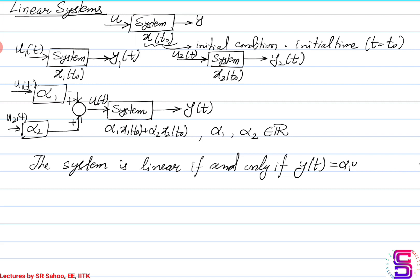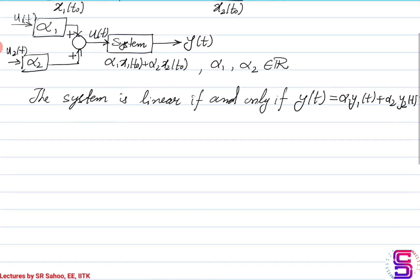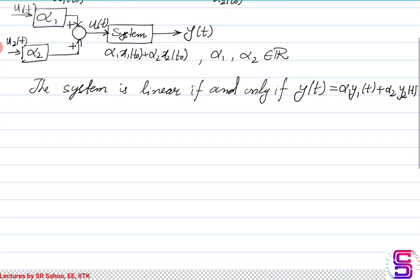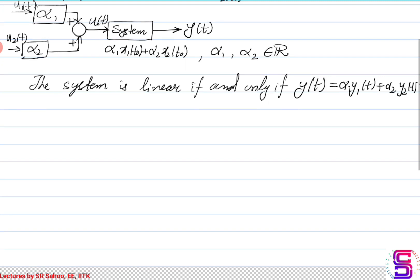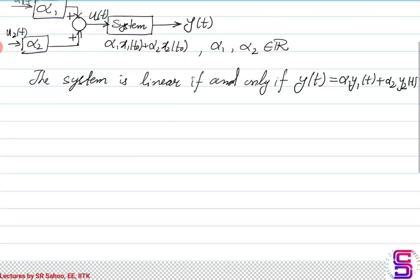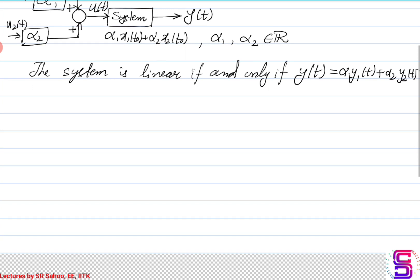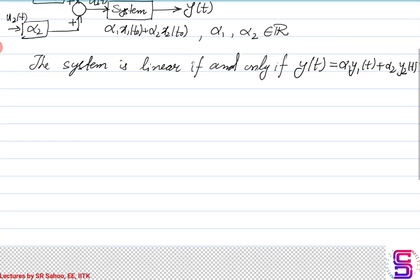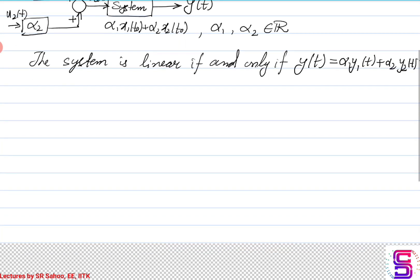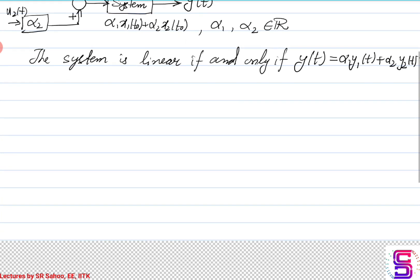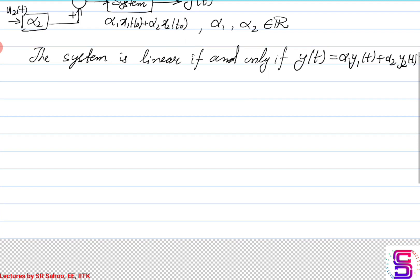It is a linear combination of the individual outputs. So if you subject the system to different inputs under different initial conditions, you get some outputs. If you then subject the same system with a linear combination of those inputs and the same linear combination of the initial conditions, and the new output equals the linear combination of the individual outputs, then it is a linear system. Note that the scalars used in the linear combinations must be the same throughout.